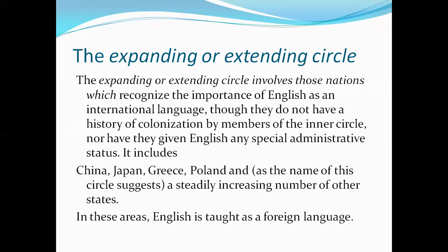Another circle Kachru has claimed is called the expanding or extending circle. This circle comprises nations where English plays an important role as a means of communication — where English is taught as an international language or a foreign language. This circle includes China, Japan, Greece, and Poland, and it has a strictly increasing number of territories where English is taught as a foreign language.